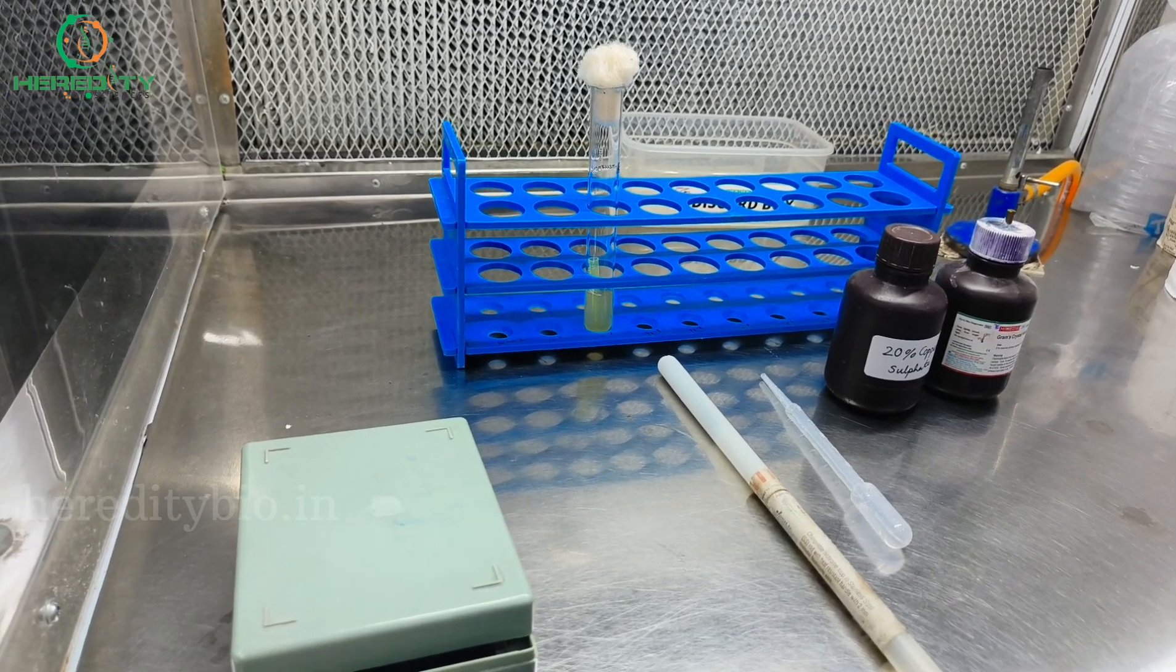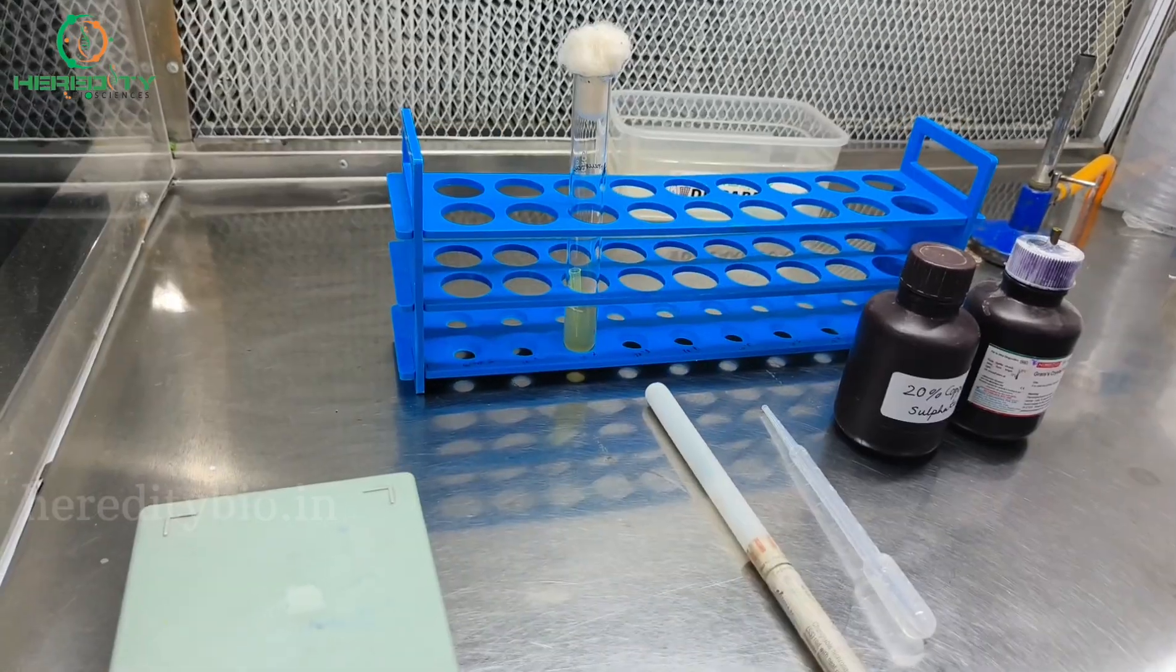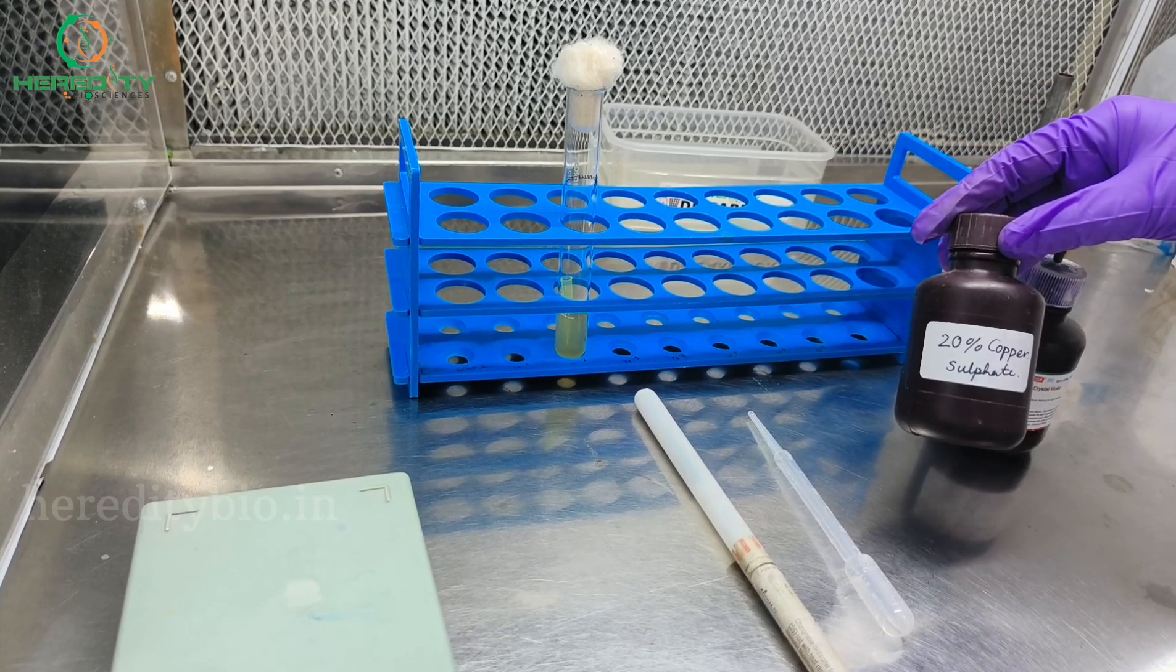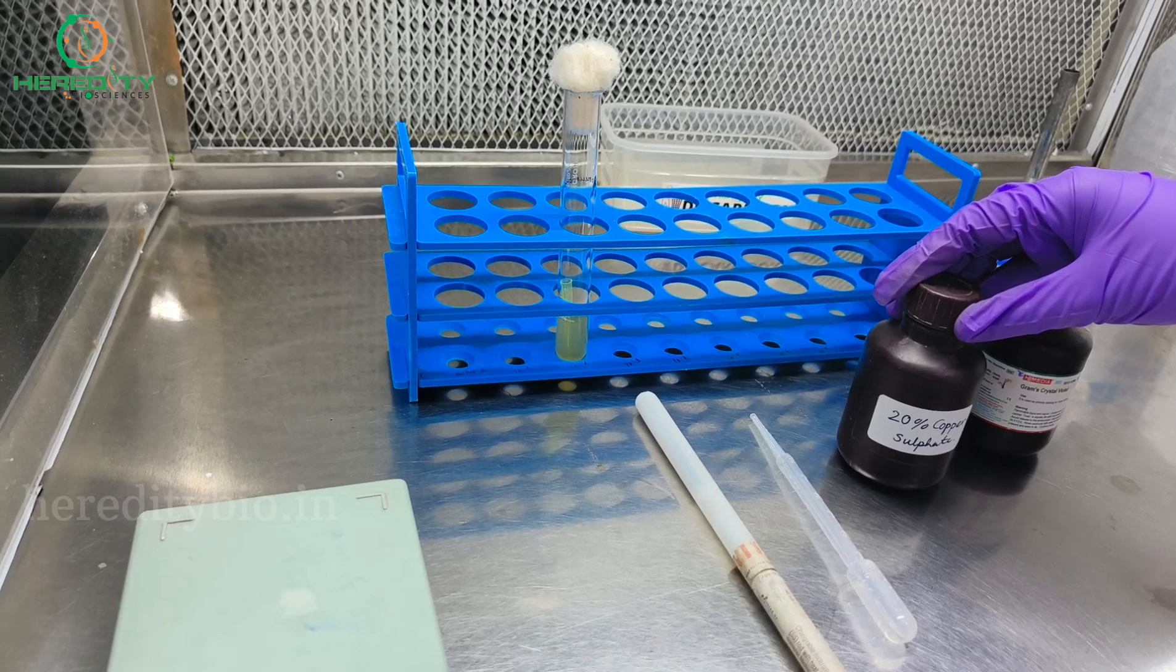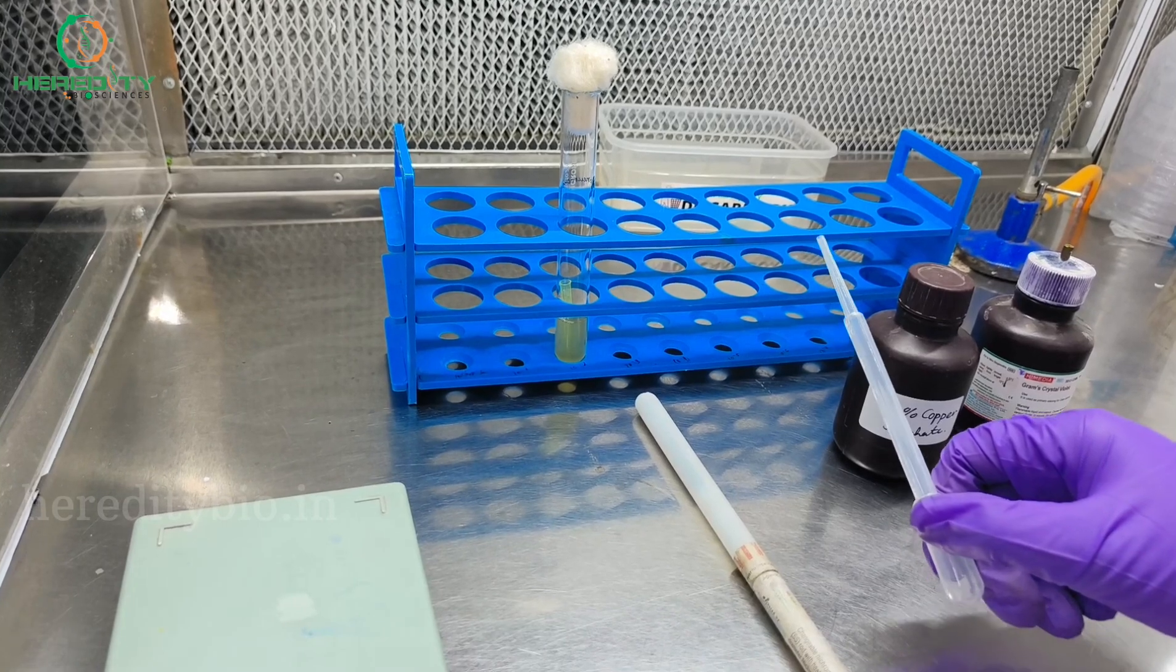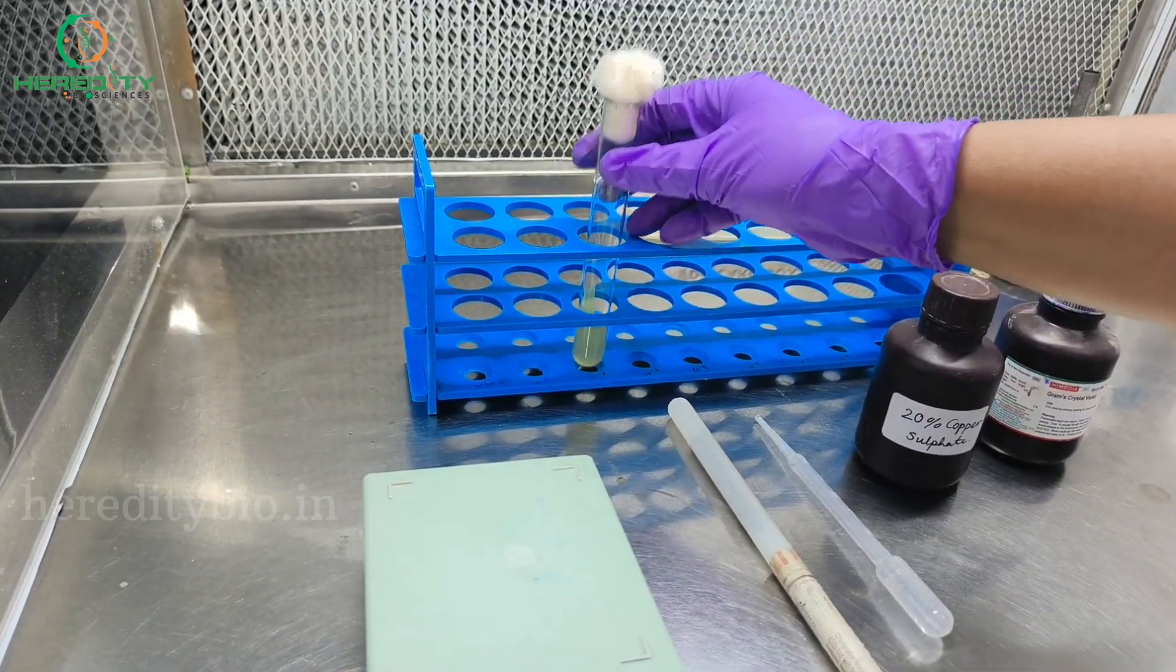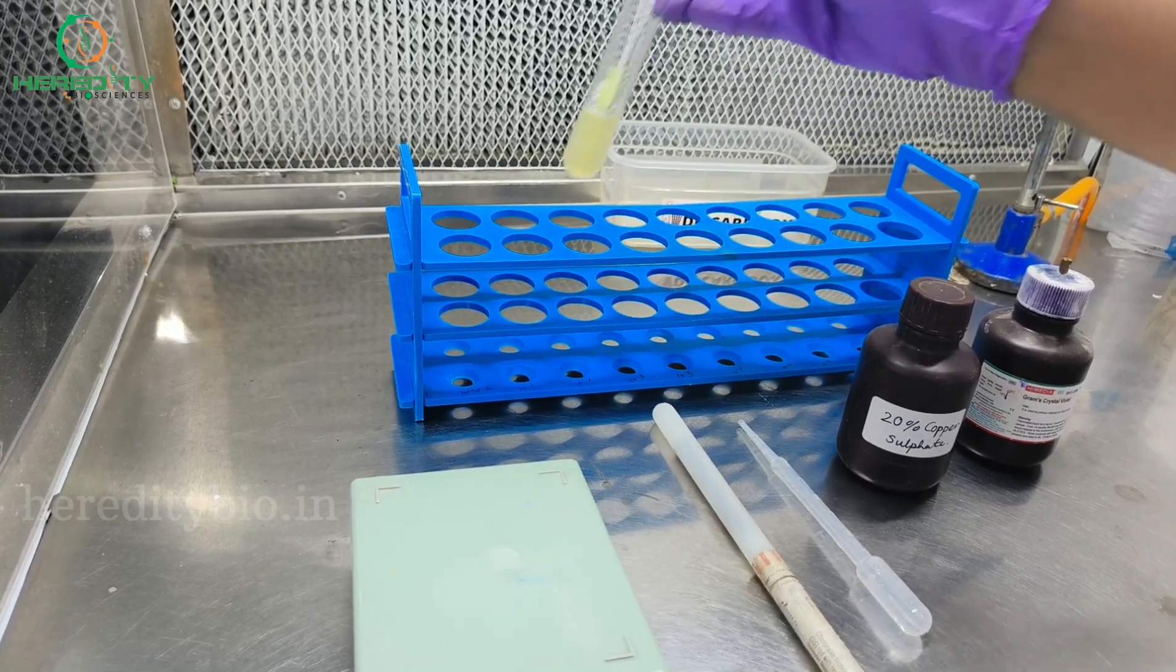Now we will go over the requirements and the procedure of Anthony's capsule staining. For performing Anthony's capsule staining, we need Gram's crystal violet as a stain, 20% copper sulfate as a decolorizing agent which we use for washing the slide. Do not wash the slide with water. We also need a dropper for decolorization, inoculation loop, glass slide, and Klebsiella pneumoniae culture because it forms capsule so that we can visualize it.